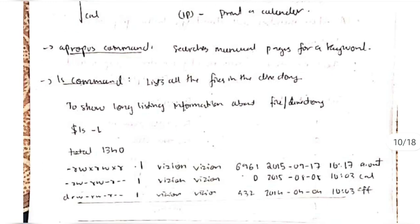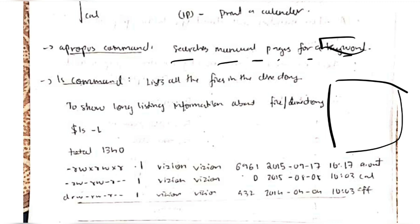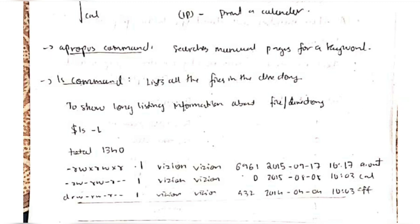The 'apropos' command searches the manual pages for a keyword — it acts like a finder. If I type any keyword, the apropos command will search for that keyword in the manual pages. The 'ls' command is important — it lists all the files in the directory.